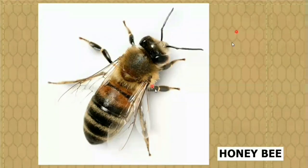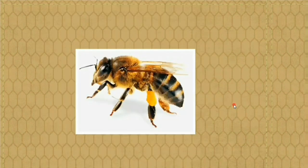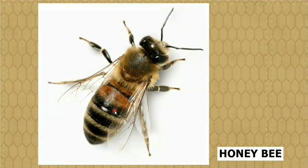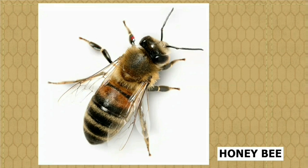This is a honeybee. Honeybee is a flying insect. The color of its body is yellow. It has six legs: one, two, three, four, five, and six.